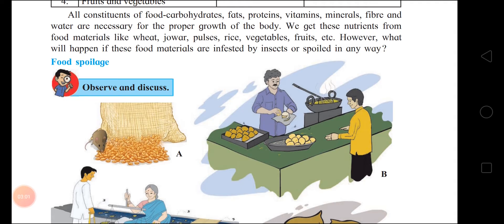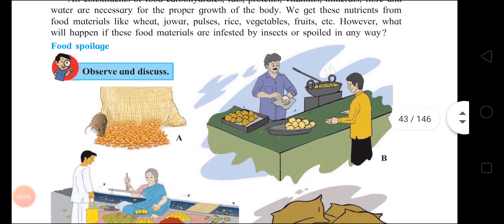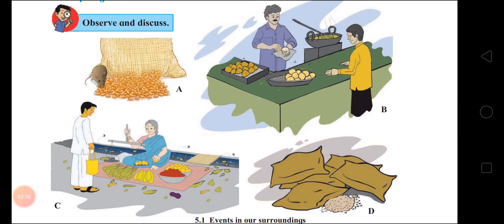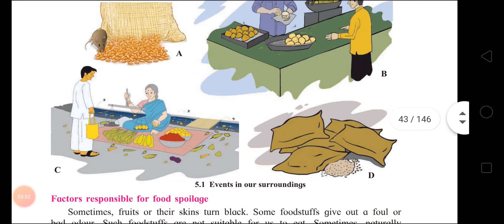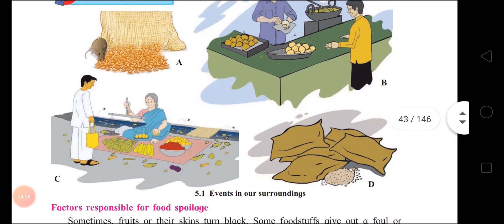Now, food spoilage. See the picture here. In picture A, a mouse is eating the grains. Then, see how food is sold on the stalls — all flies are flying around. Dirt can settle on the food, and if you eat it you will fall ill. See all the veggies — the fruit seller is sitting with rubbish all around her. Near the sack, dirt is also accumulated. These are events in our surroundings, and these are the main factors responsible for food spoilage.